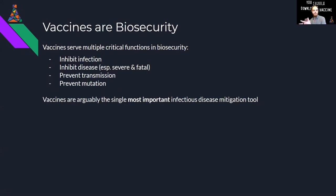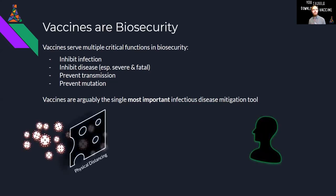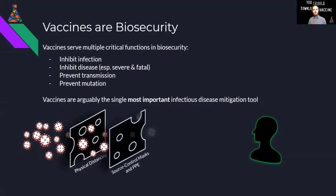Vaccines serve to combat disease in a number of ways — primarily by inhibiting infection, inhibiting disease, inhibiting transmission, and inhibiting replication, which subsequently inhibits mutations and the evolution of new pathogens. Although there are a variety of important and even very useful tools to achieve some of these functions, vaccines are arguably the most important.